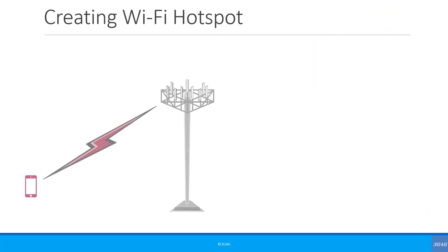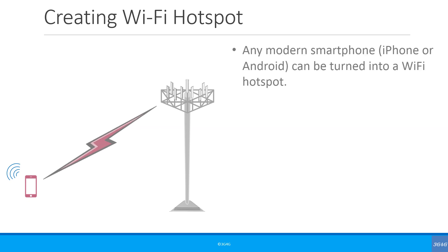Let's start with the basic concept of creating a hotspot. You have a mobile phone — Android or iPhone — that is connected to the mobile network base station. You can switch on the Wi-Fi hotspot on the phone and it creates a Wi-Fi hotspot. So any modern smartphone can be turned into a Wi-Fi hotspot. This is known as Wi-Fi tethering.